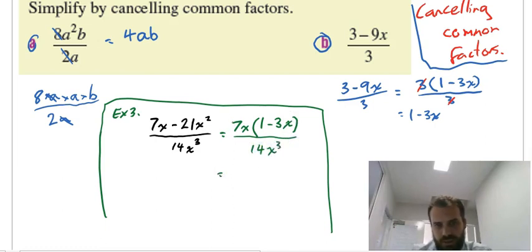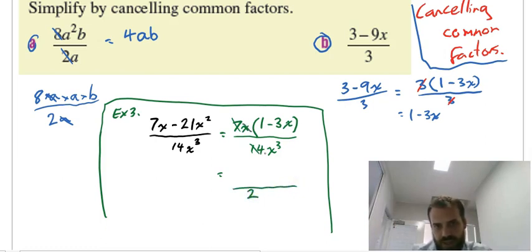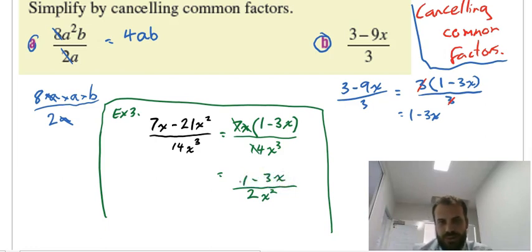And now I can look at these and say: the 7 and the 14 cancel out, leaving a 2 on the bottom. The x and the x cubed cancel out, leaving an x squared on the bottom. And the top is going to be 1 minus 3x. So, 1 minus 3x over 2x squared — there's our answer.